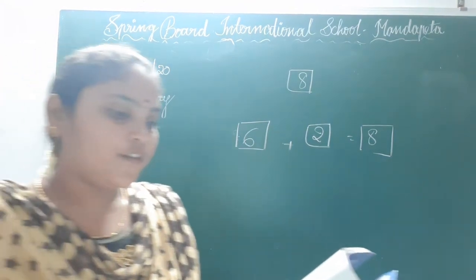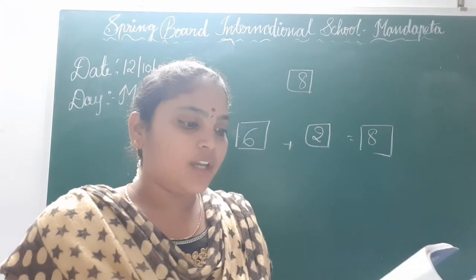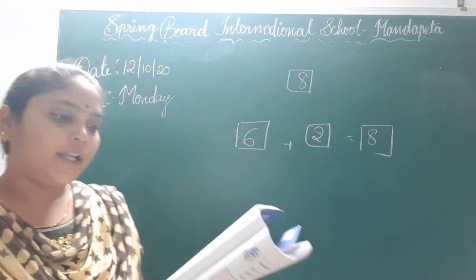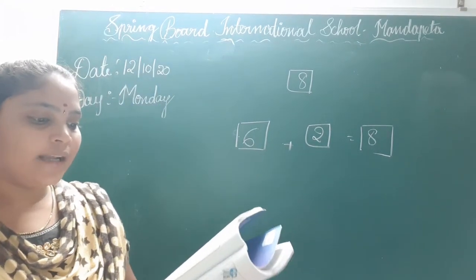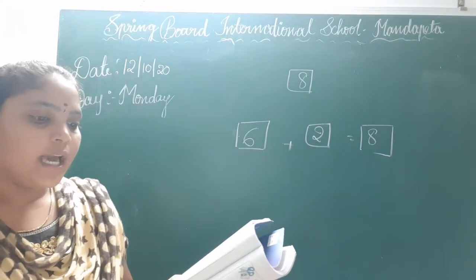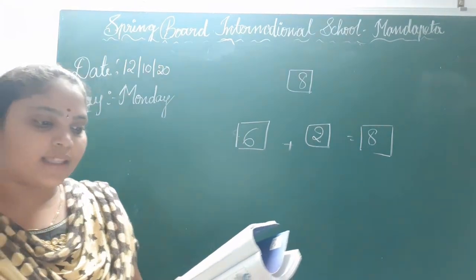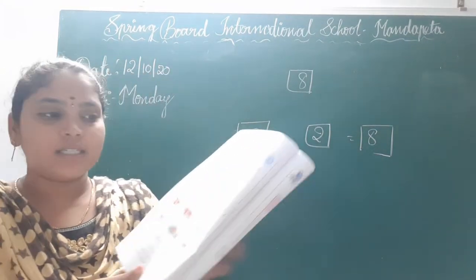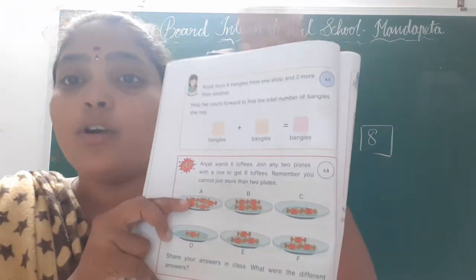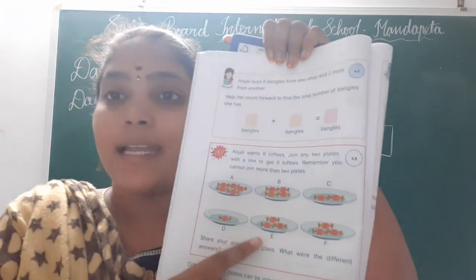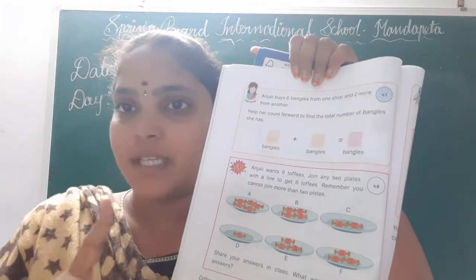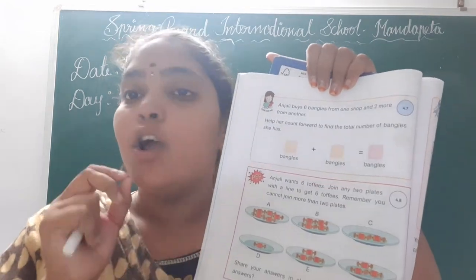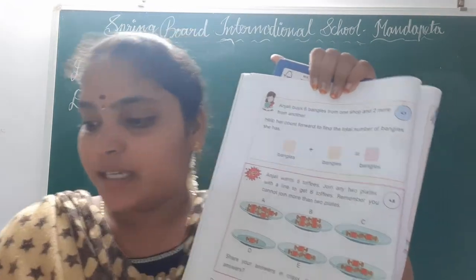Next 4.8. Anjali wants 6 toffees. Join any 2 plates with a line to get 6 toffees. Remember you cannot join more than 2 plates. Here you have to join 2 plates to get a total of 6 only.